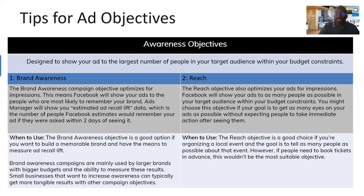The reach option also optimizes impressions, but it shows ads to as many people as possible in the target audience within a budget constraint. The main use for this is if you're organizing a local event and trying to get as many people as possible to it. However, if people needed to book tickets in advance, reach wouldn't be the best fit. On the awareness side, getting your brand name in front of as many people as possible is the goal.